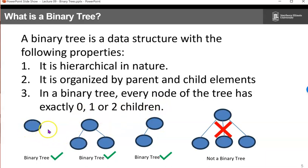So here are some examples. 0, 1, or 2 children. 0 children, that's a valid binary tree. 0, 2 is valid, 1 is valid, but 3 is not.